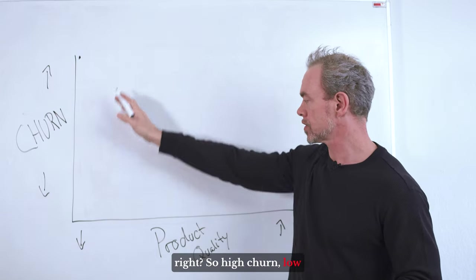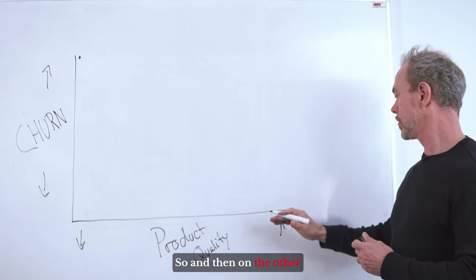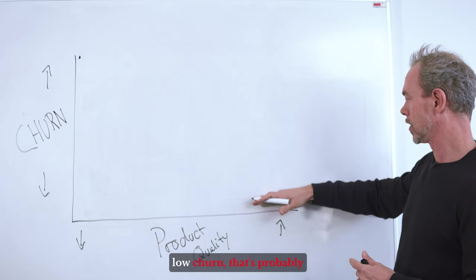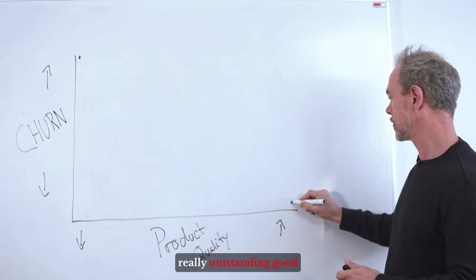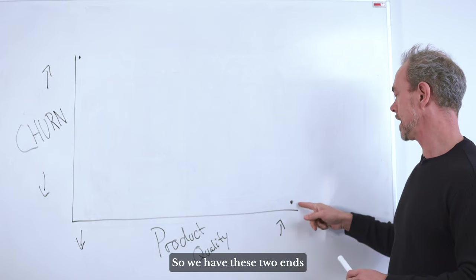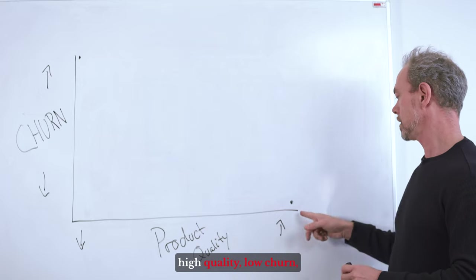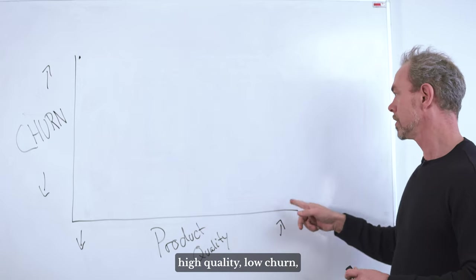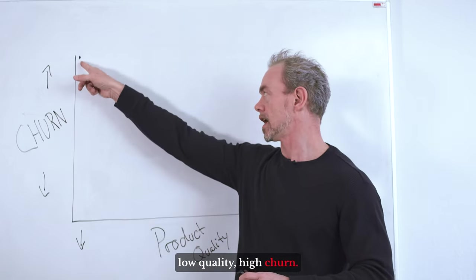If we have really high churn, we're also expecting to have really low product quality. So we know that wherever we are, we're probably going to start here. That's the intuition, right? So high churn, low product quality. And then on the other end, if we have really low churn, that's probably when we have a really outstanding good product. So we have these two ends here where we're saying high quality, low churn, low quality, high churn.